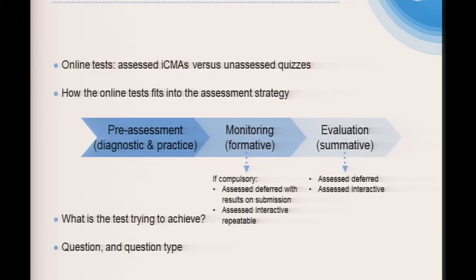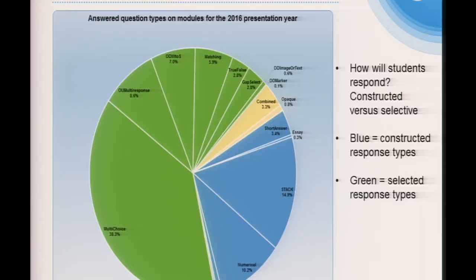Designing a quiz is very complicated. You can spend as little as five minutes or as much as five months quite easily. What we call an online test is made up of unassessed quizzes and assessed ICMAs — interactive computer marked assessments. There are a lot of considerations when designing an online test: the assessment strategy, where it fits into our modules, what the online test is trying to achieve, and ultimately the questions the module team would like to ask. Some stats we recently ran show that multiple choice accounts for almost 40% of all answered question types at the OU — good reason for this, it's very straightforward, accessible, and easy to mark.